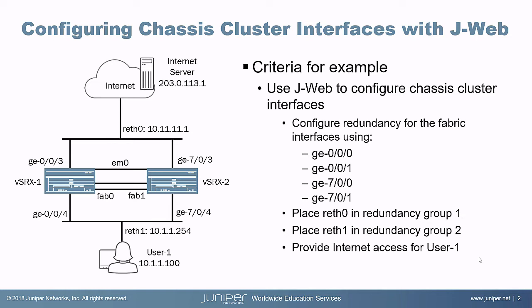The criteria we want to meet: we'll use JWeb to configure these interfaces. We need to configure redundancy for the fabric interfaces using ge-0/0/0, ge-0/0/1, ge-7/0/0, and ge-7/0/1. reth0 goes into redundancy group 1, reth1 into redundancy group 2, and we need to provide internet access for user 1. Note: we are not configuring interface or IP monitoring here — that will be covered in a separate learning byte on IP and interface monitoring with chassis clustering through JWeb.